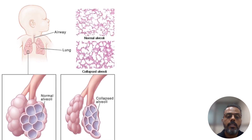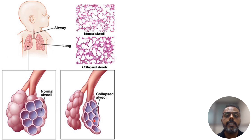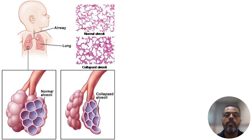This picture shows normal alveoli, and this picture shows collapsed alveoli in which there is an absence of lung surfactant — which is the case seen in premature babies suffering from RDS.